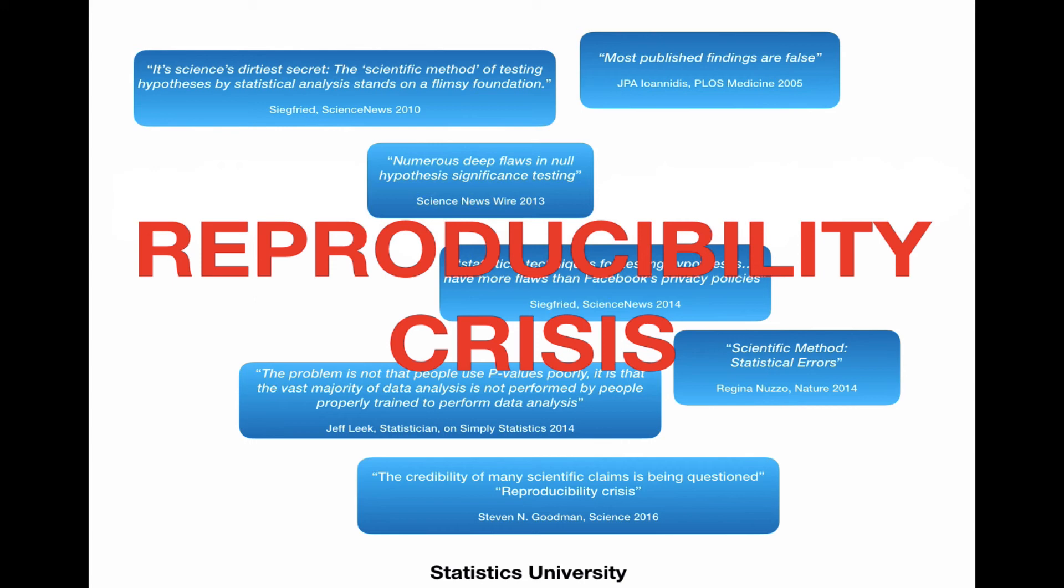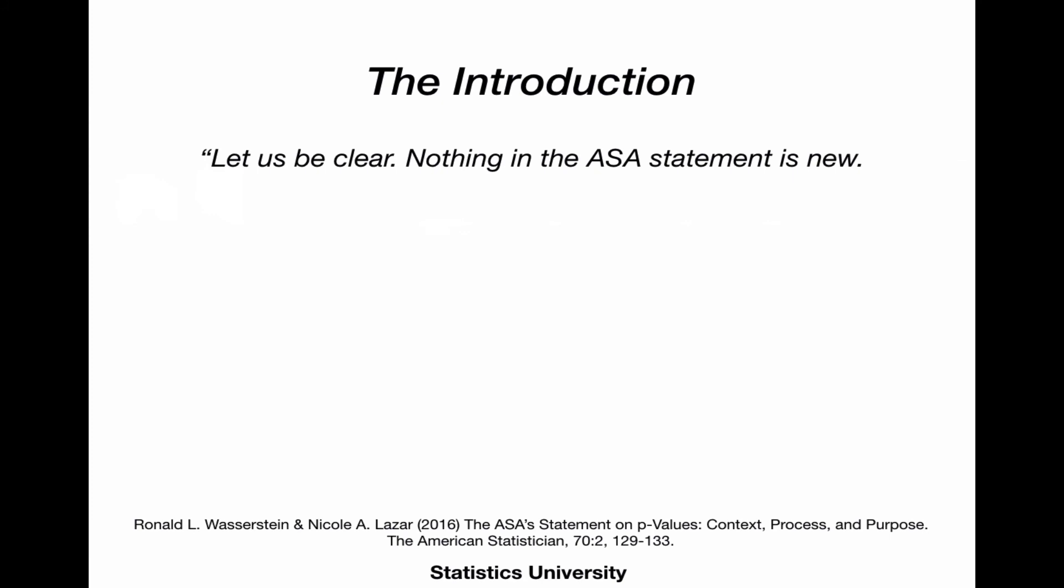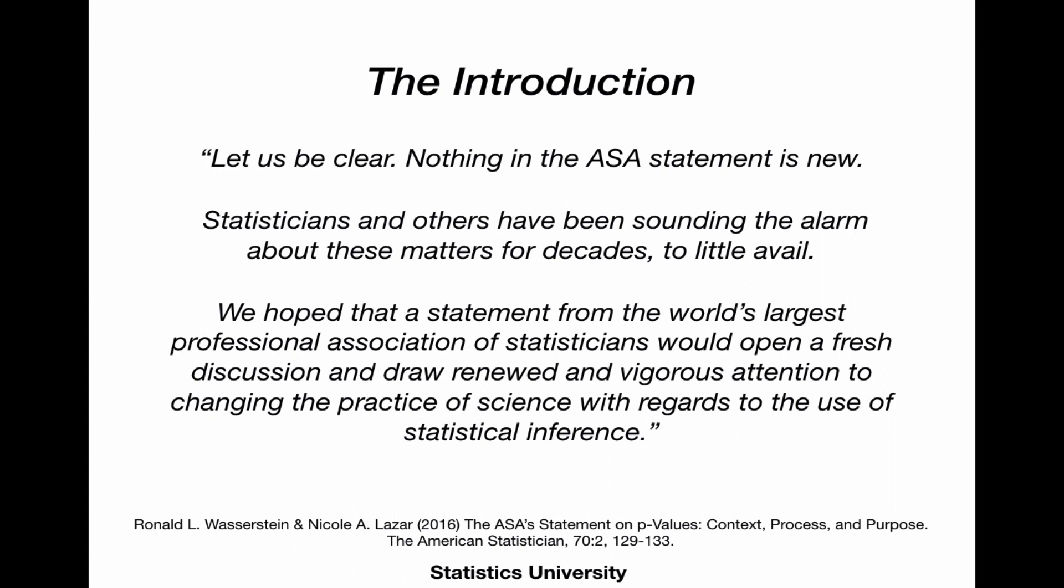As already mentioned, the ASA published this paper in the American Statistician in 2016. And they introduced that paper with, let us be clear, nothing in the ASA statement is new. Statisticians and others have been sounding the alarm about these matters for decades to little avail. But we hope that a statement from the world's largest professional association of statisticians would open a fresh discussion and draw renewed and vigorous attention to changing the practice of science with regards to the use of statistical inference.